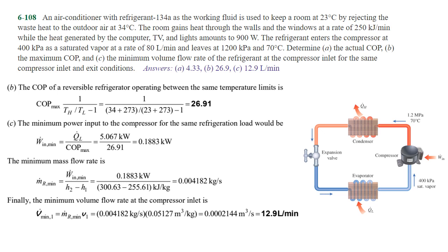For part b, we want to calculate the maximum coefficient of performance. The best you can do is for a reversible refrigerator. If it's reversible, we're going to use the Carnot approximation. We know what T_H and T_L are - they are 34 degrees and 23 degrees. Remember to convert those to Kelvin before you use them. You can calculate the maximum coefficient of performance you could ever get would be 26.91.